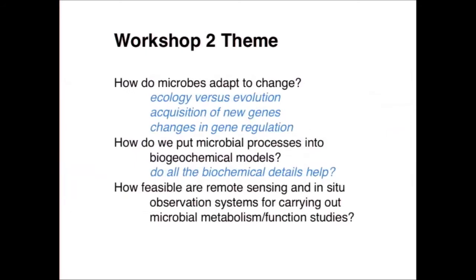I'm going to end there. Workshop two themes that might stimulate discussion: How do microbes adapt to change? Our real issue is distinguishing between ecological adaptation through a change in community composition versus evolution, which on the time scales of climate change may actually be a real important factor. Also the switching of genes, so microbes can become other things by acquiring key genes. How do we put microbial processes into biogeochemical models? Do all these biochemical details really help us at the level of each gene and each organism? And finally, remote sensing and in situ observation systems — is there a way to get at some of these questions remotely? Thank you very much.